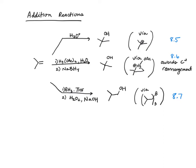In addition reactions, we've got three sets of conditions that will yield alcohols. In the first case, we have the reaction with acidic water — dilute sulfuric acid, which we can write as H3O+ or the hydronium ion. In our second case, we're treating with mercury acetate and water, and then in the second step, sodium borohydride as a reducing agent.